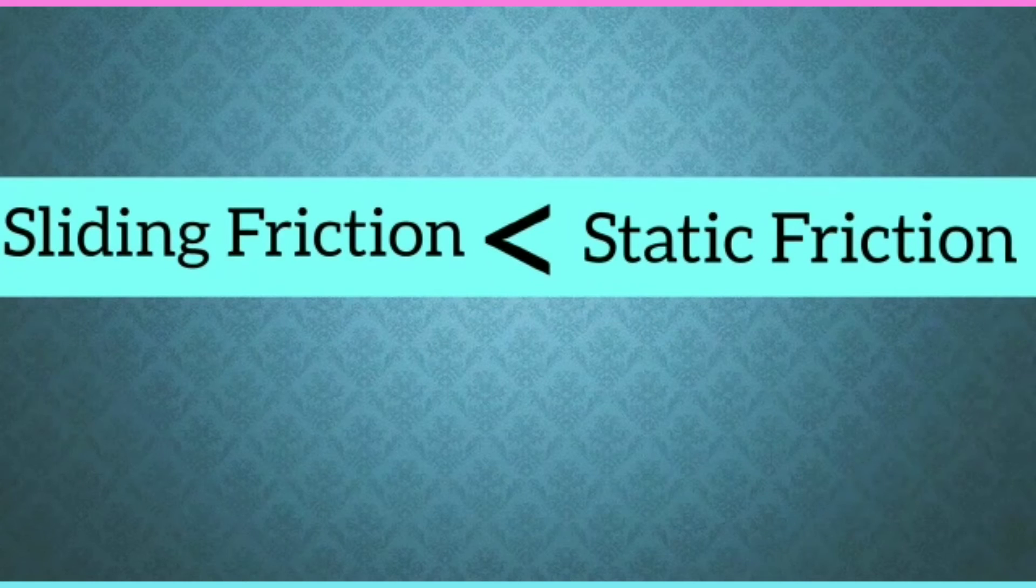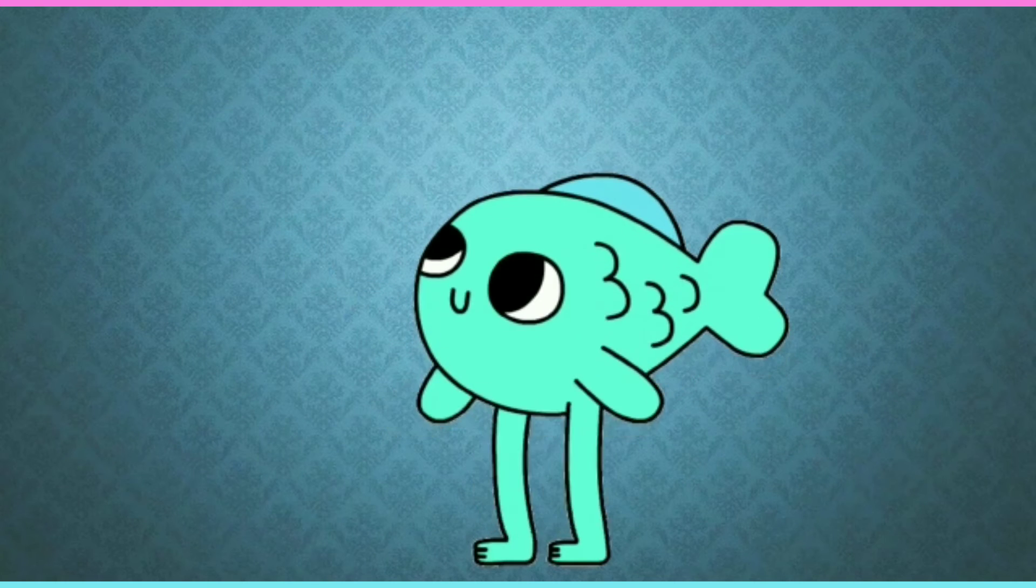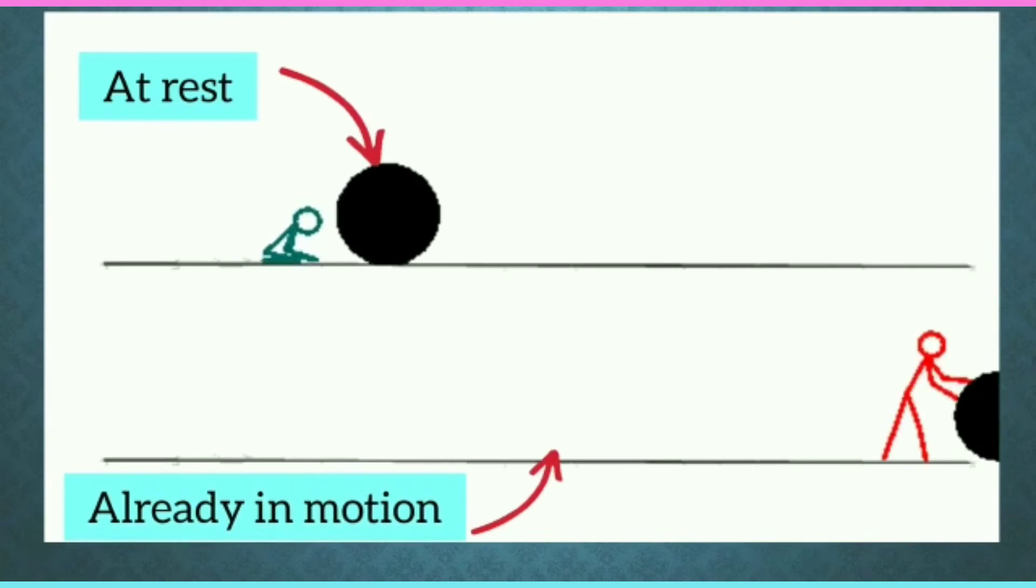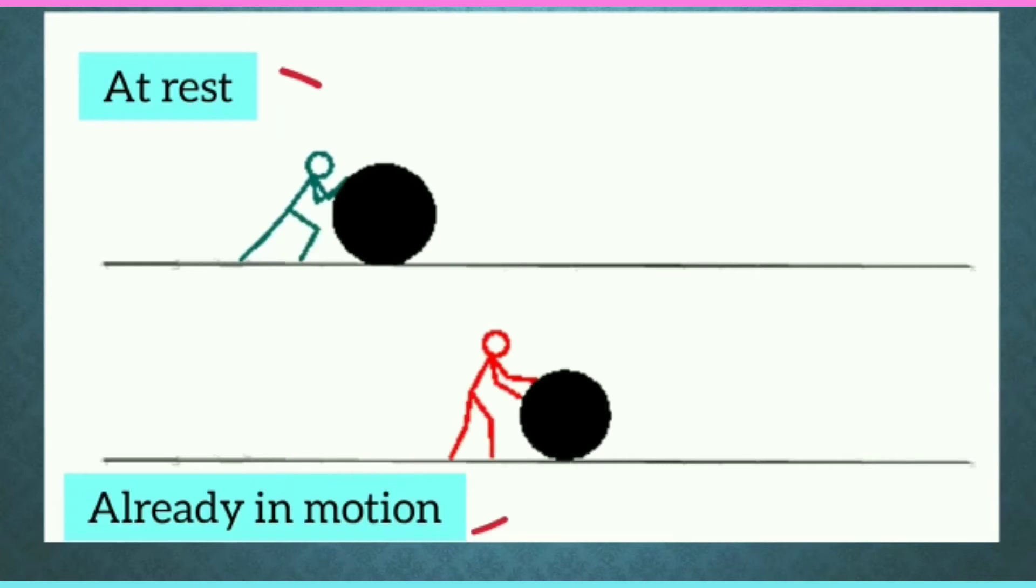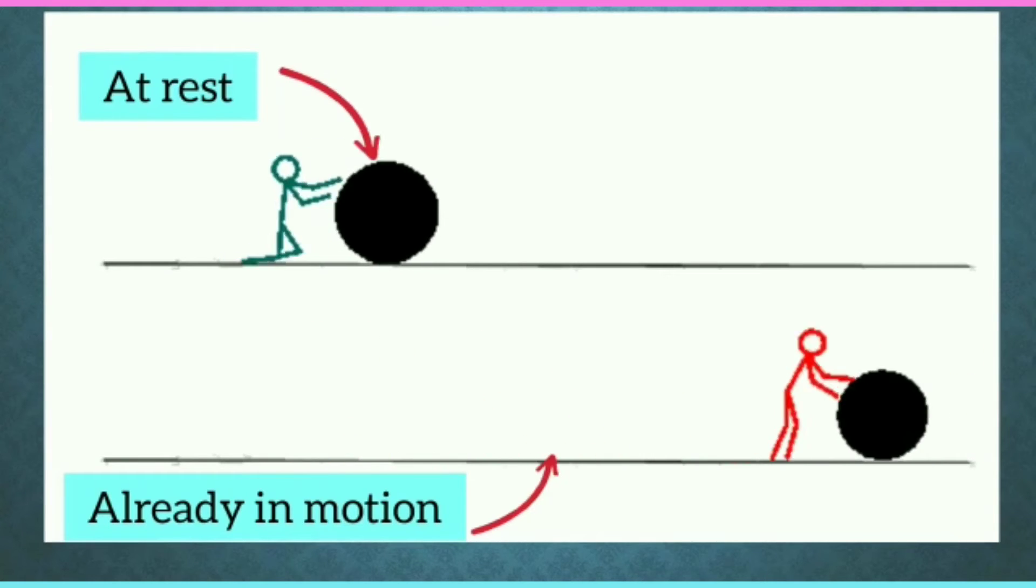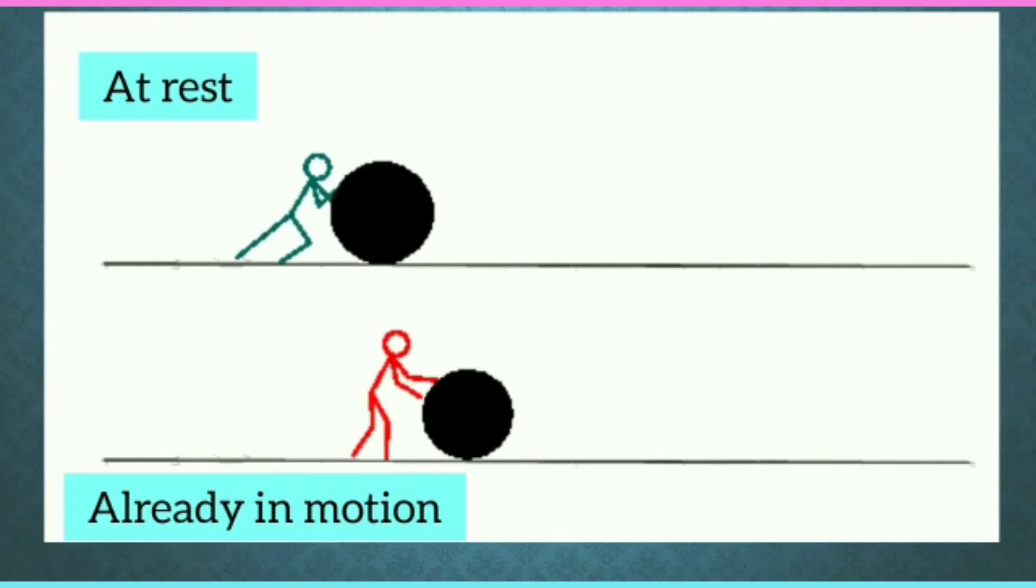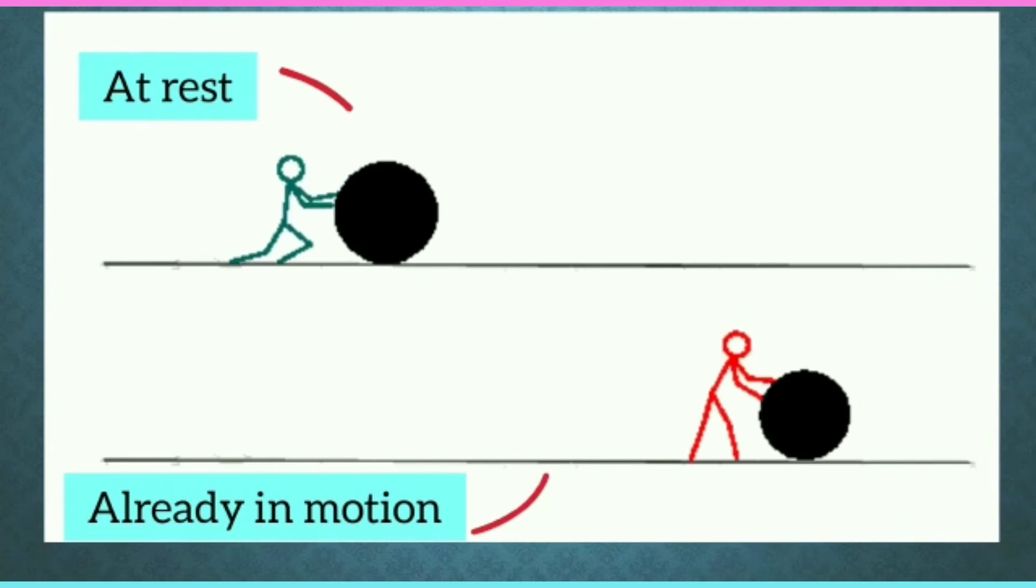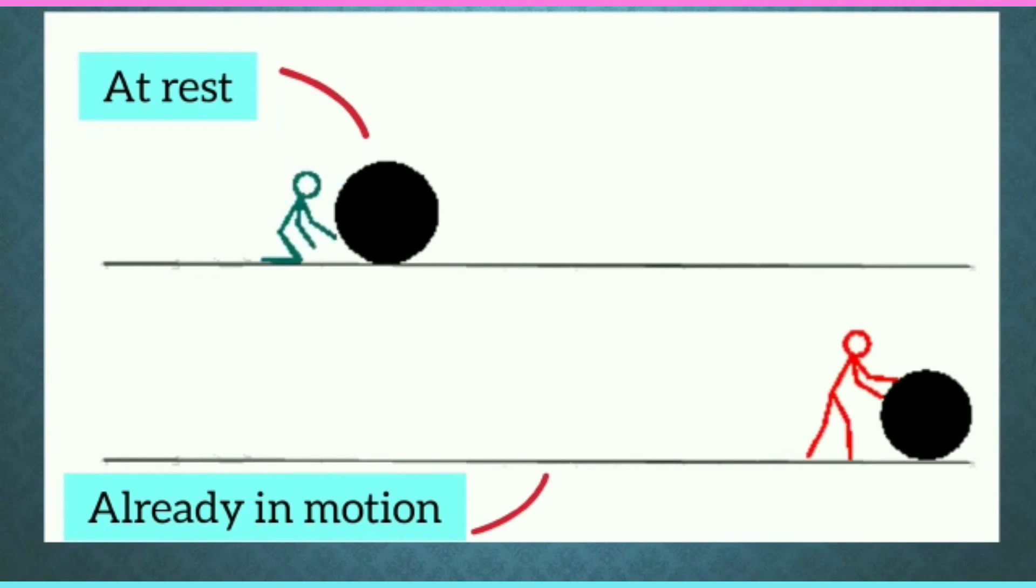Sliding friction is smaller than static friction. Do you know why? Because it is easier to keep an object moving which is already in motion than to move the same object from rest or stationary position.